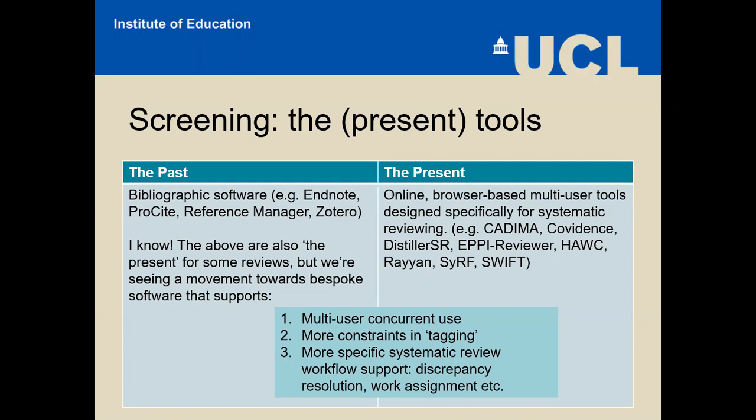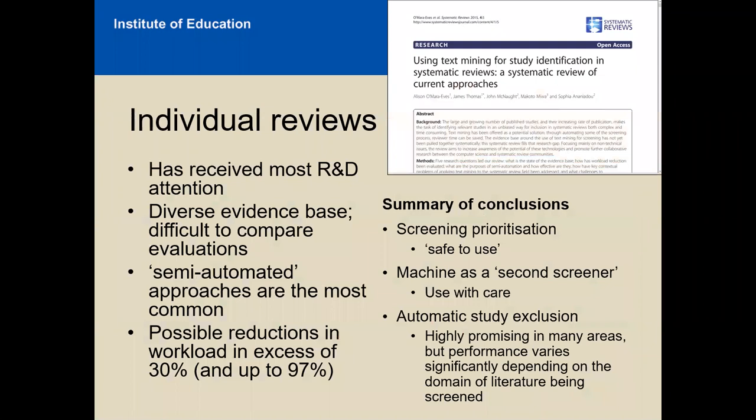Many of you will be aware of the browser-based tools being used specifically for systematic reviewing: Cadima, Covidence, Distiller, EpiReviewer, HAWC, Rayyan, SciVerse, and Swift Reviewer are probably the main ones. There has also been work using machine learning and text mining to identify studies for inclusion in reviews at this stage, and this functionality is present in many tools now — for example, Abstrackr, EpiReviewer, Rayyan, and I think Distiller as well.